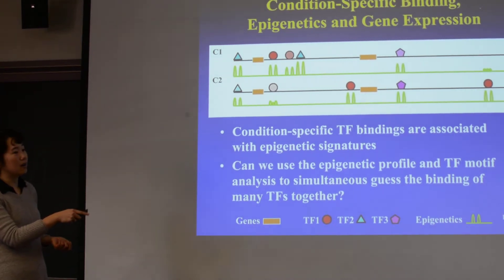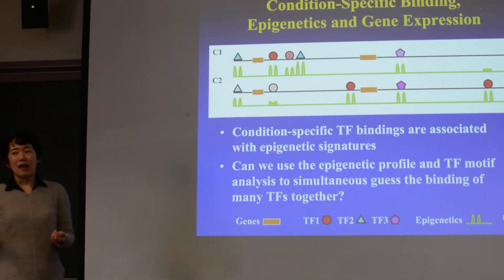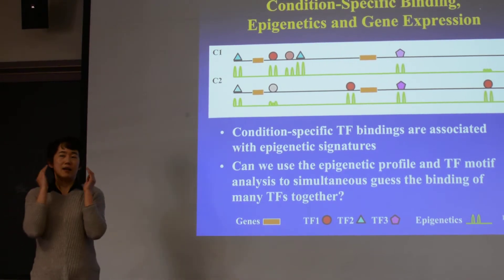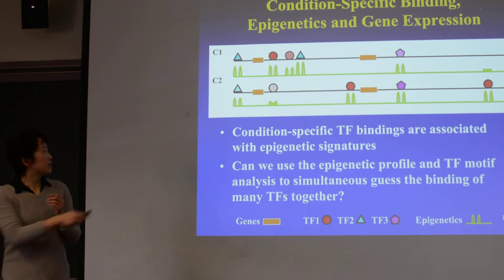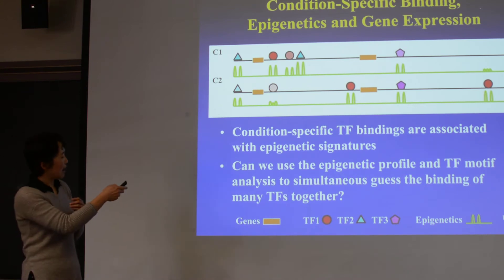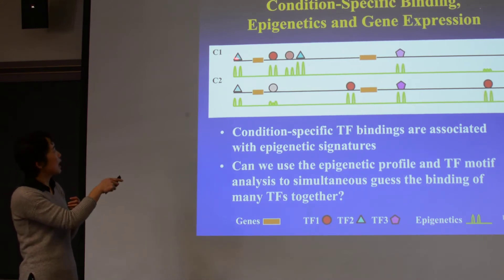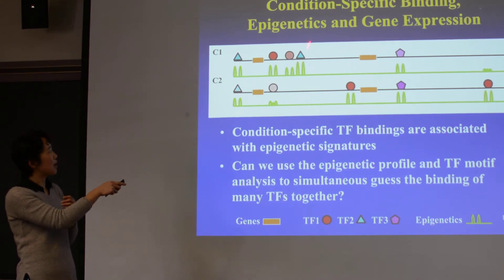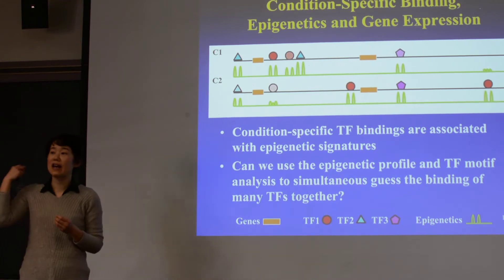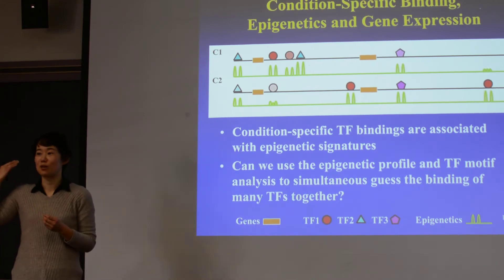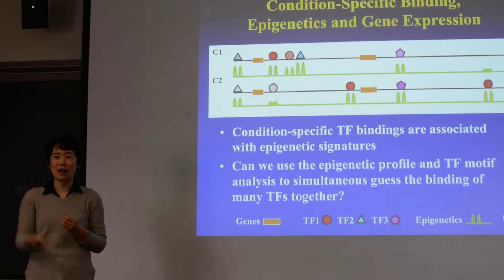These little marks are here - they are like actors on the stage. So if we have to figure out where the actors are, we have to do one actor at a time, each transcription factor at a time.